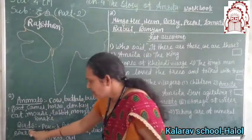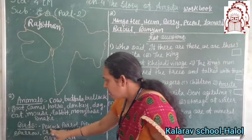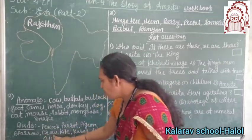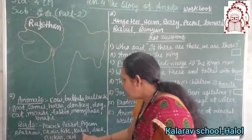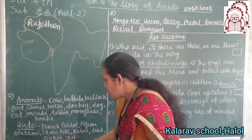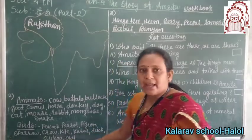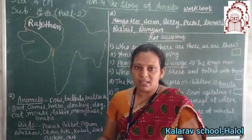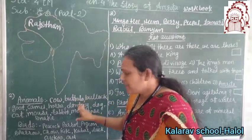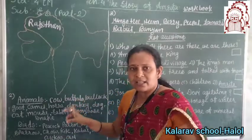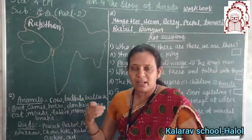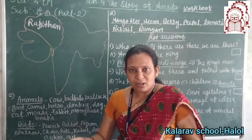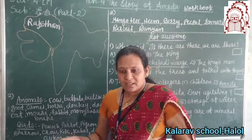Now, which ones are the birds? Birds are peacock, parrot, pigeon, sparrow, crow, kite, cuckoo, duck. If you know any other birds and animals, then you also mention them here. You can write others also — whatever I have written doesn't necessarily have to be your only answer.